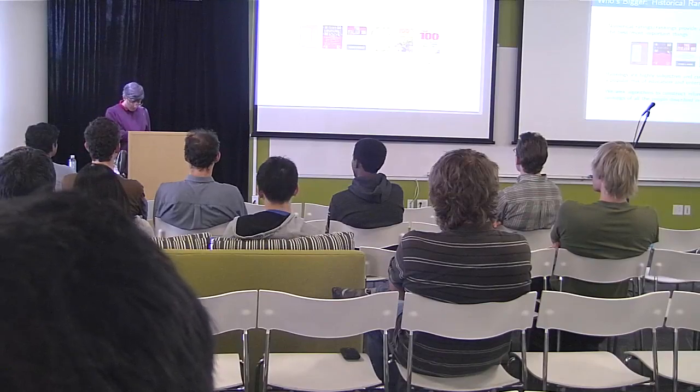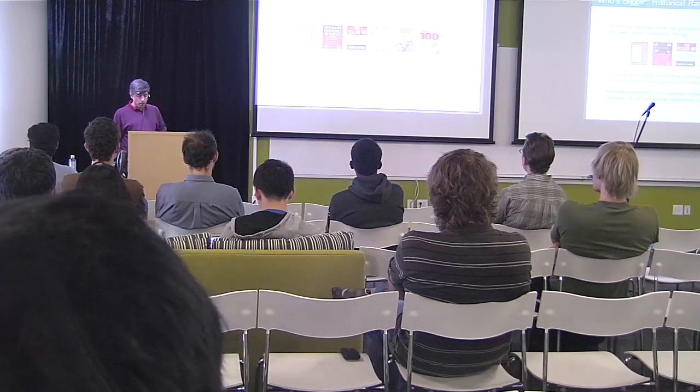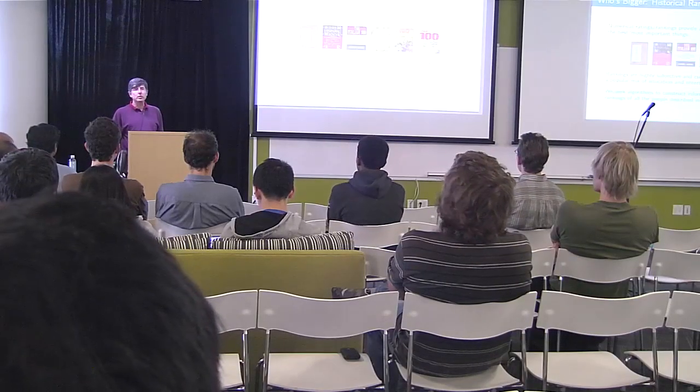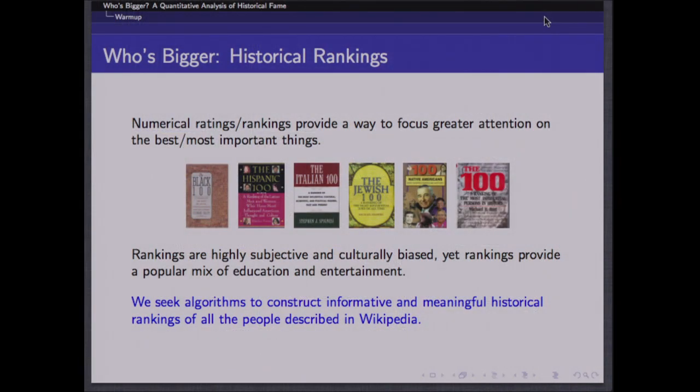Let me talk about what I want to discuss here: we have a method or system for trying to construct relative rankings of historic figures. It's common for there to be books and newspaper articles ranking the top hundred athletes in history, or presidents, politicians, scientists, or Italians — any group you can imagine. So it's a common thing to want to rank historical figures based on significance. Basically, this talk is about a project we have to rank all the people in Wikipedia by significance.